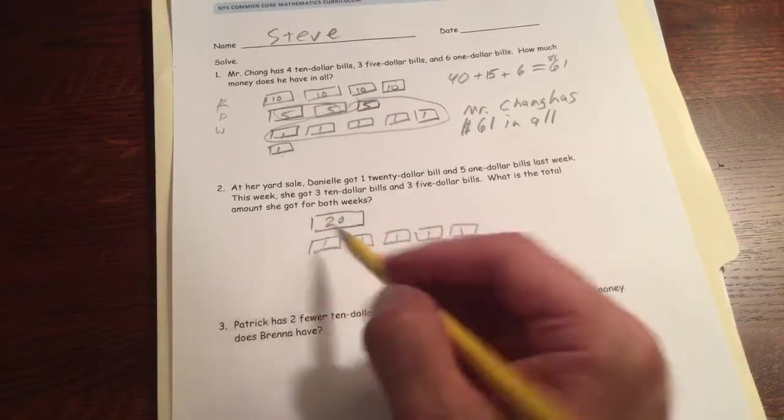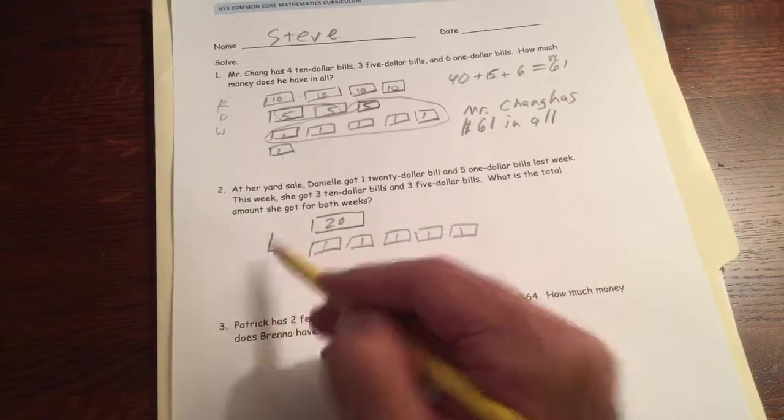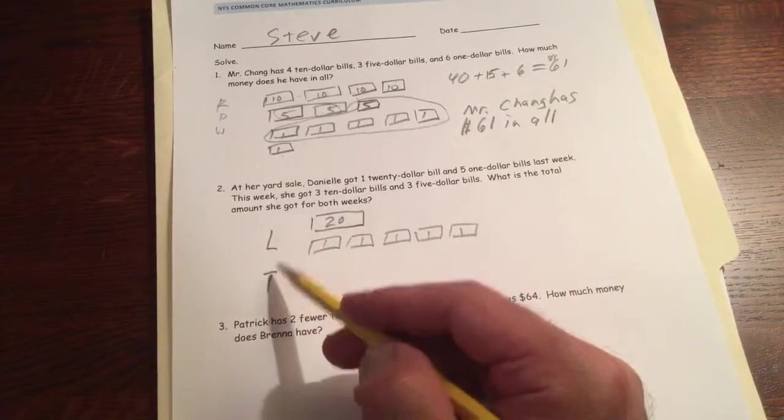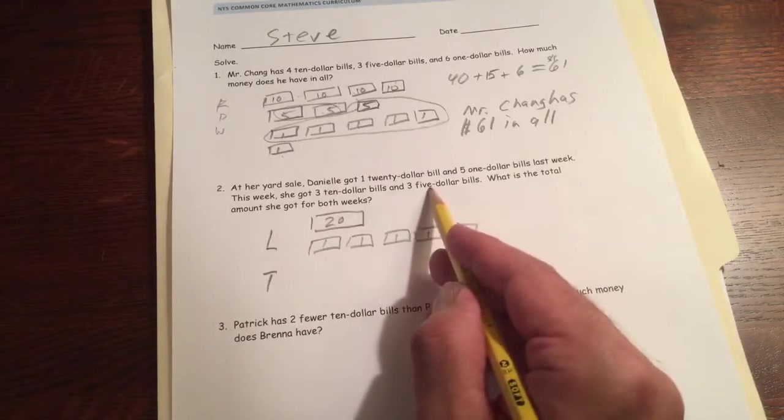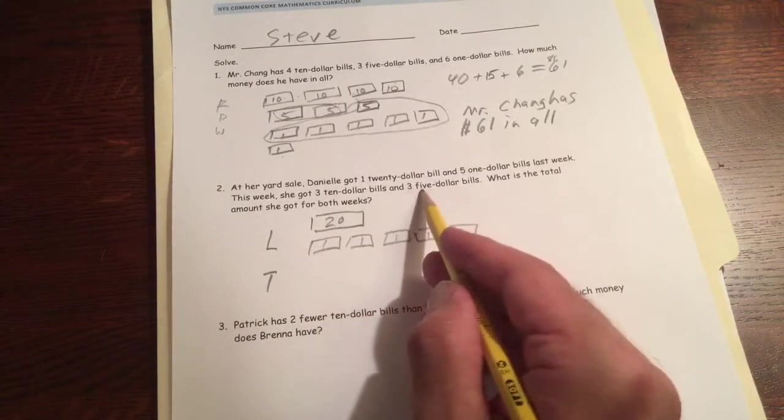This week, so this is last week, last week, and this week, L for last, T for this week. She got three tens, three $10 bills, and three $5 bills.